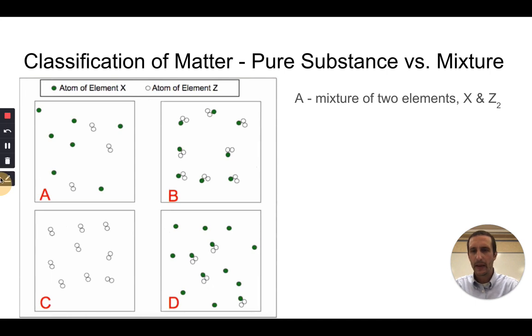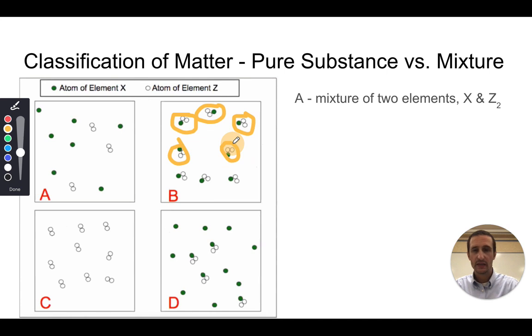If I look at B, here I see each particle in this mixture is the same. I see always two atoms of Z, one atom of X. So each one of these is the same. This is an example of a pure substance, and it is a compound, and that compound would be XZ2.